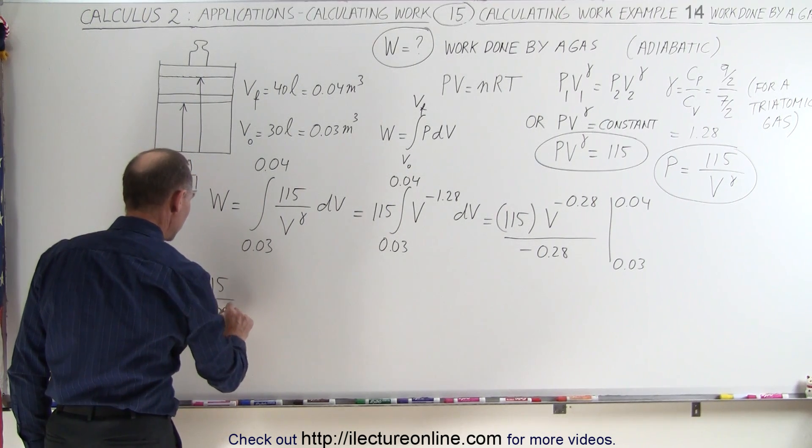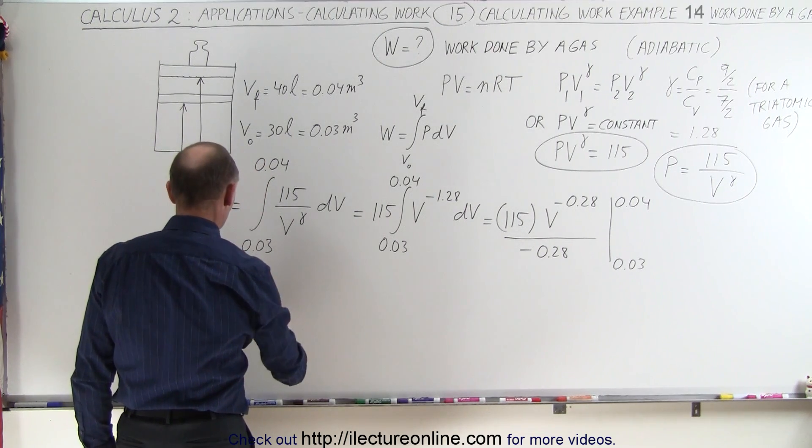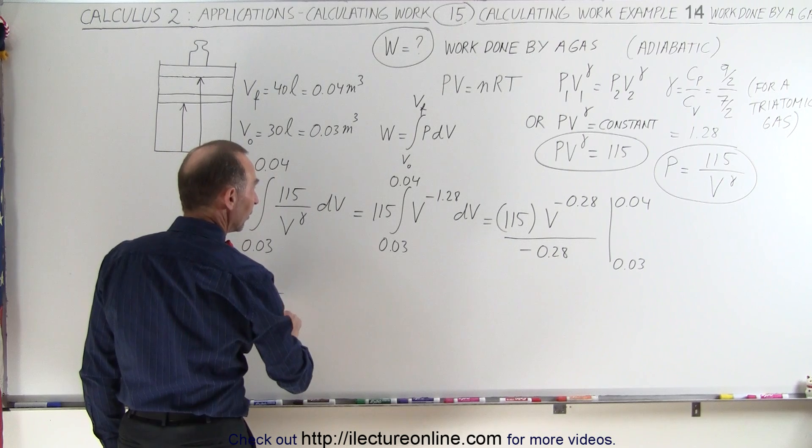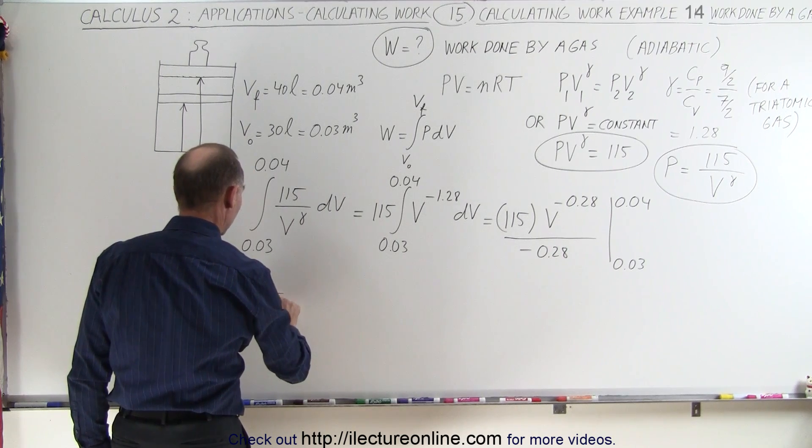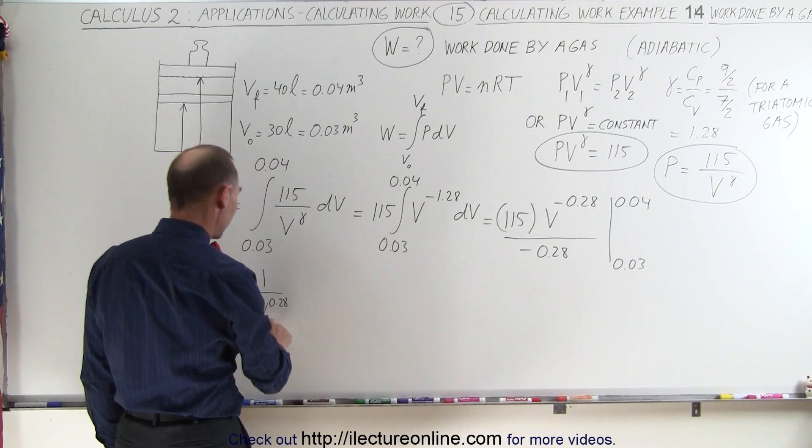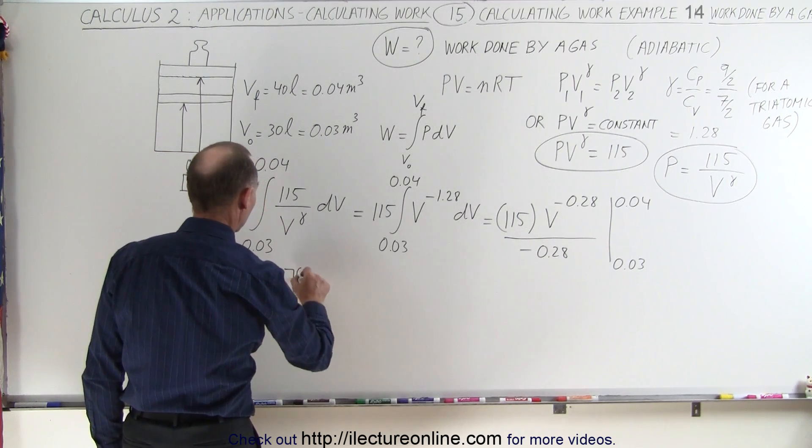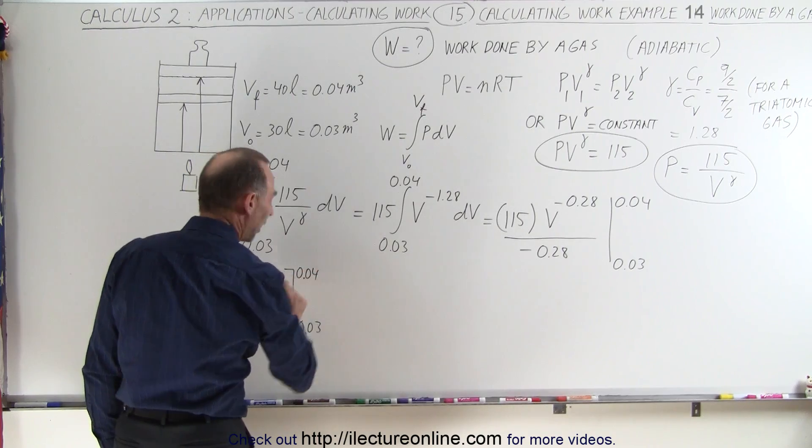Let's go ahead and evaluate that. Work done is equal to 115 divided by minus 0.28, and then we're going to evaluate 1 over v to the 0.28 power. I brought it back down to the denominator, made it positive, and evaluate that from 0.03 to 0.04.